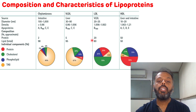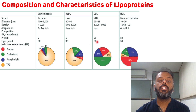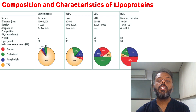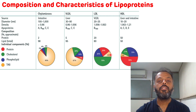LDL contains a higher amount of cholesterol. Lipid content is 80% and protein content is 20%. Within the 80%, the cholesterol portion is 50%, confirming it contains a higher amount of cholesterol. The remaining consists of 20% phospholipid and 10% triacylglycerol.